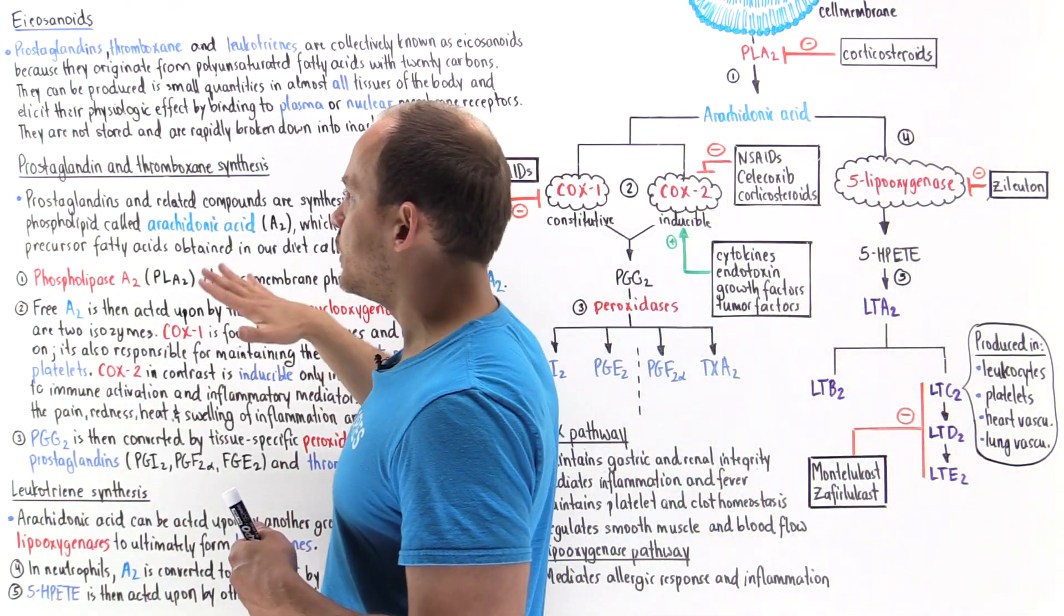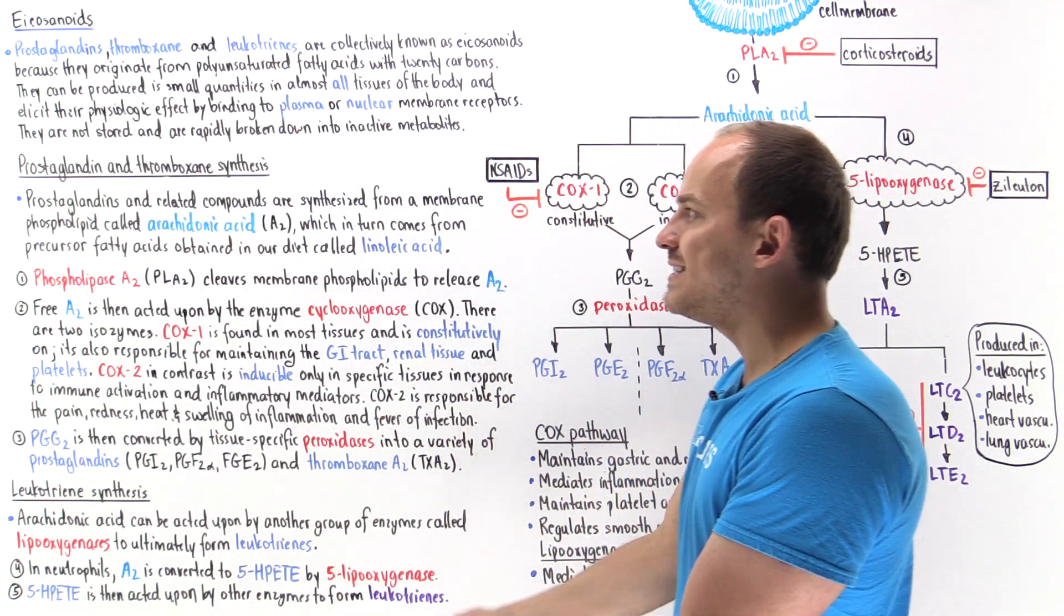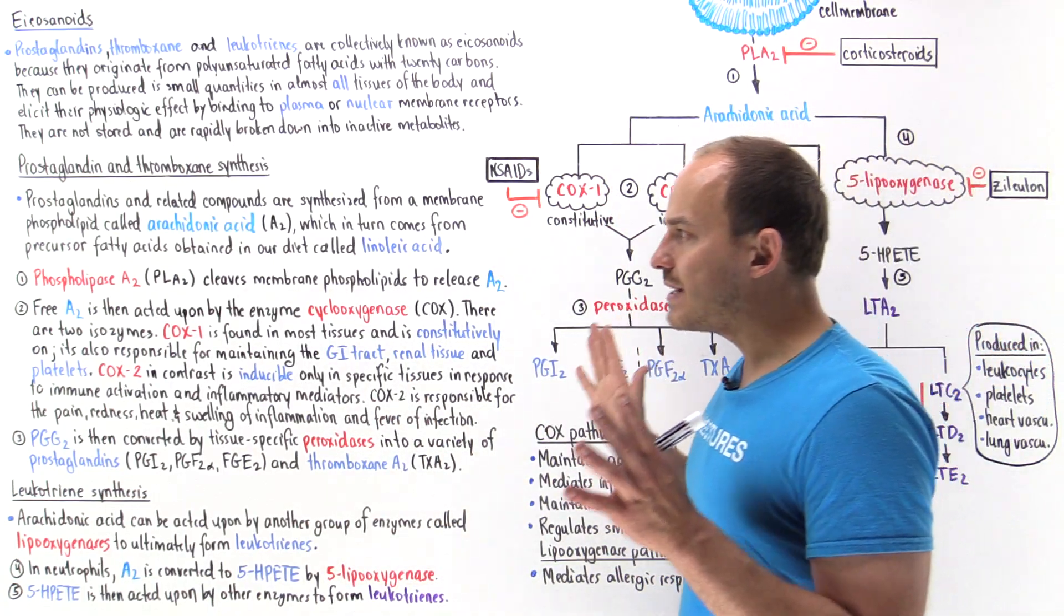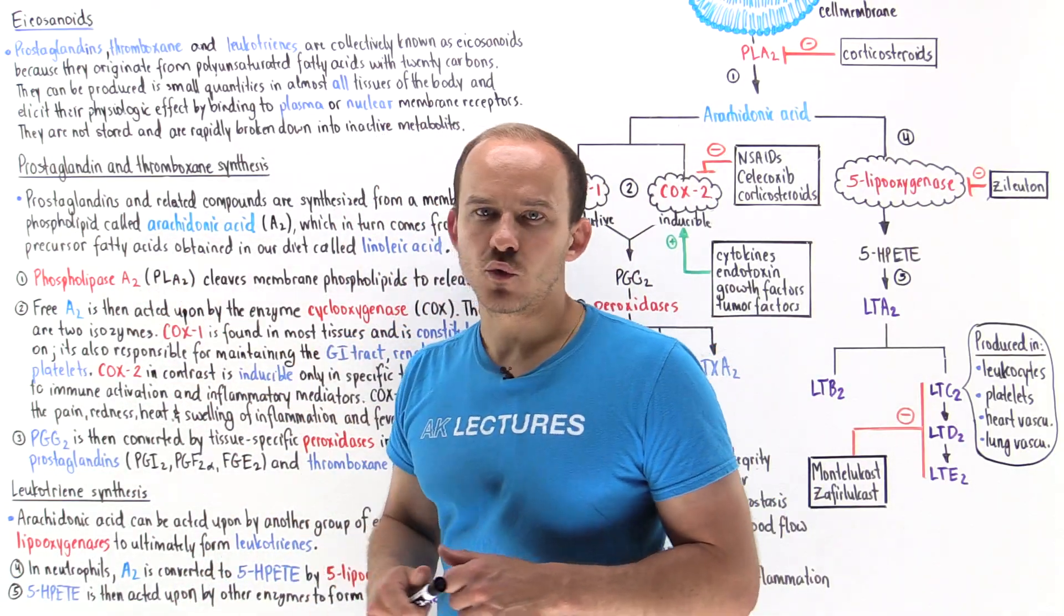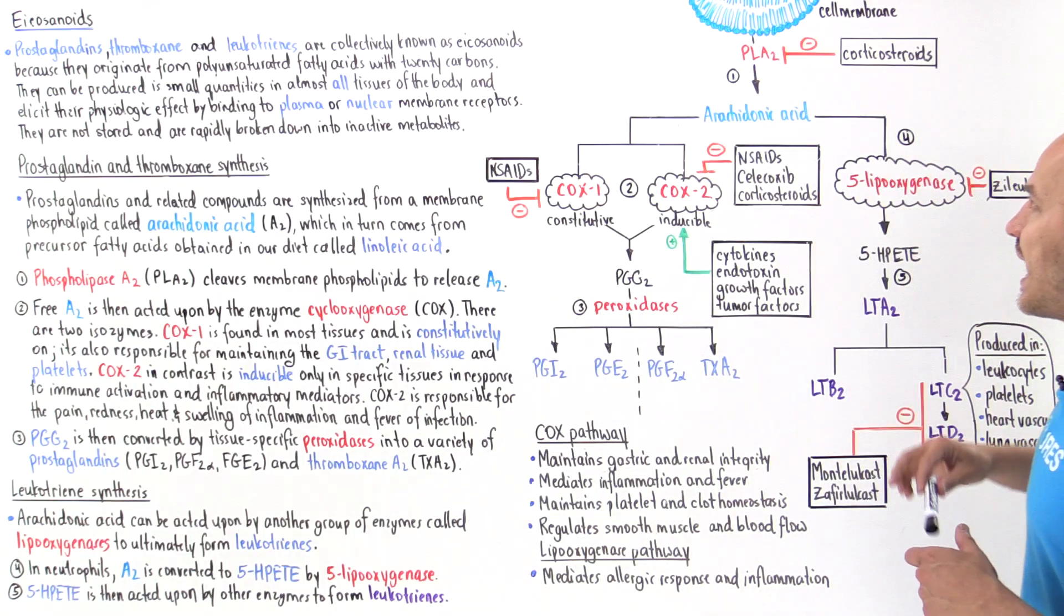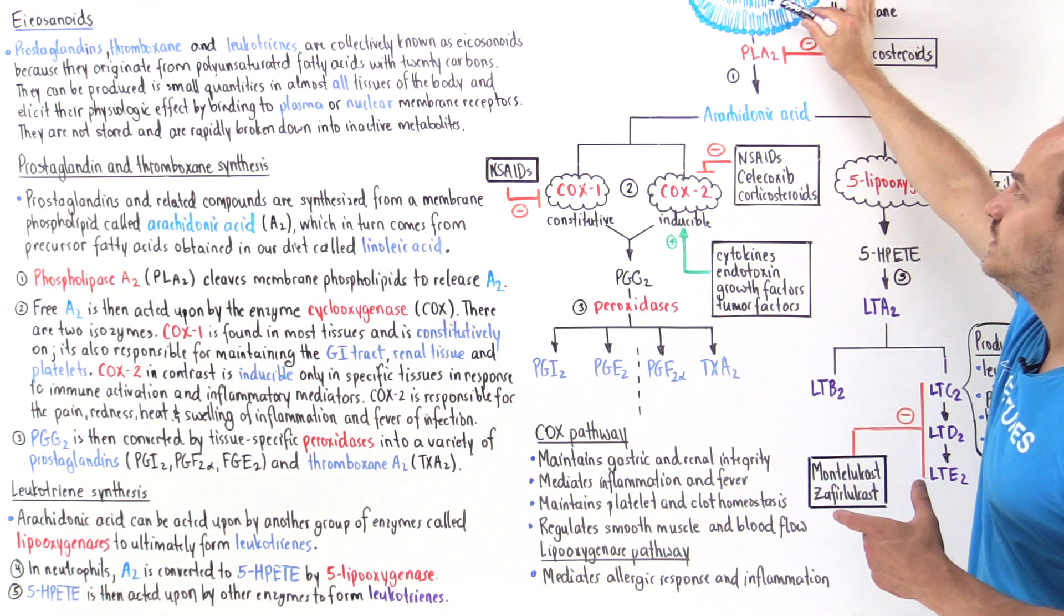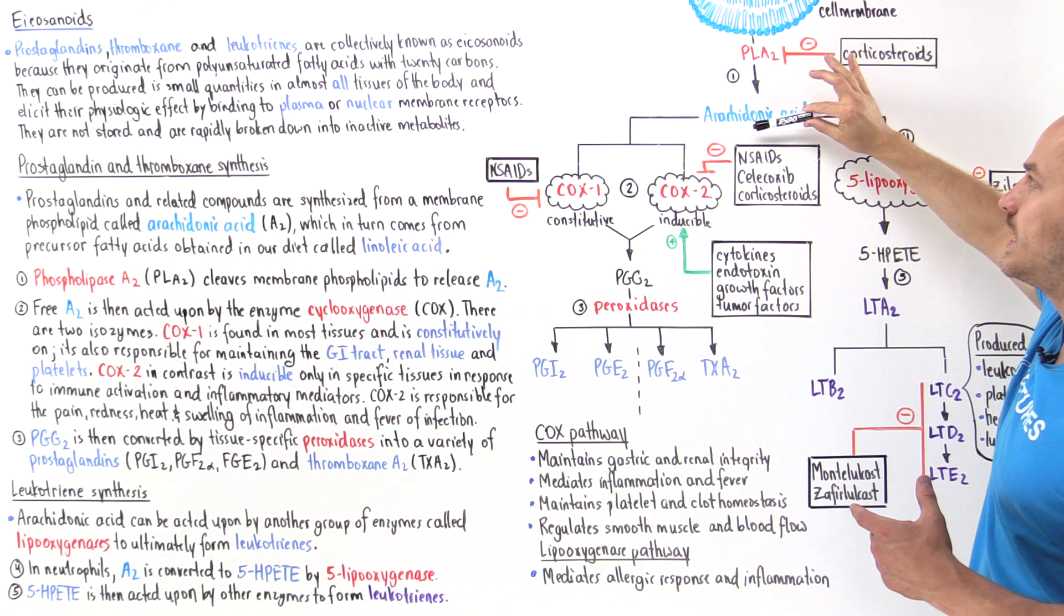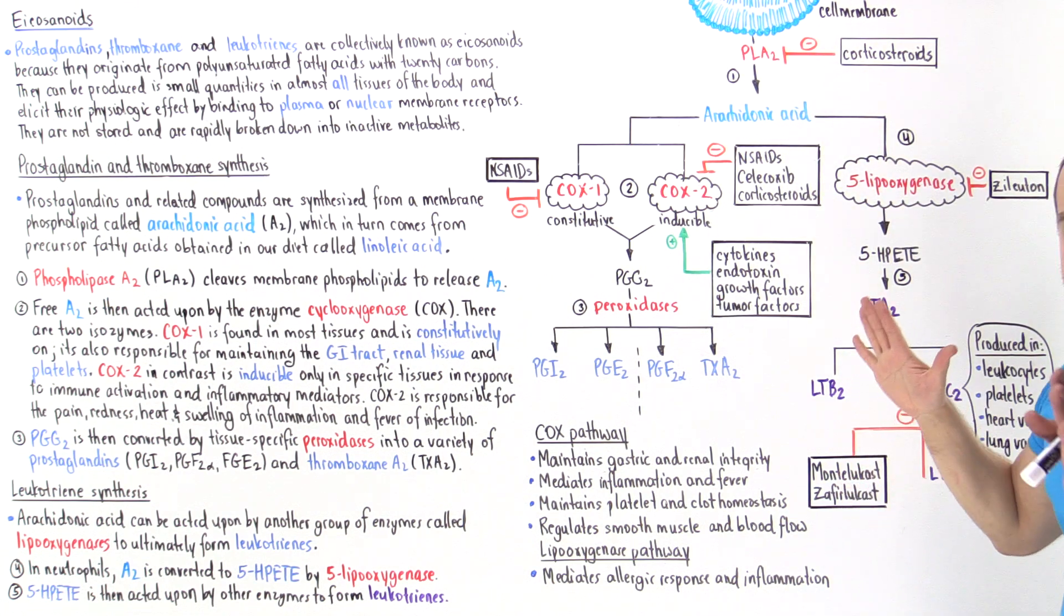Before we can use arachidonic acid to synthesize these eicosanoids, we have to detach it from the phospholipids in the cell membrane. The enzyme that does that is phospholipase A2, where A2 stands for arachidonic acid. It cleaves the arachidonic acid from the phospholipids, freeing it, and now we have free arachidonic acid in the cytoplasm.